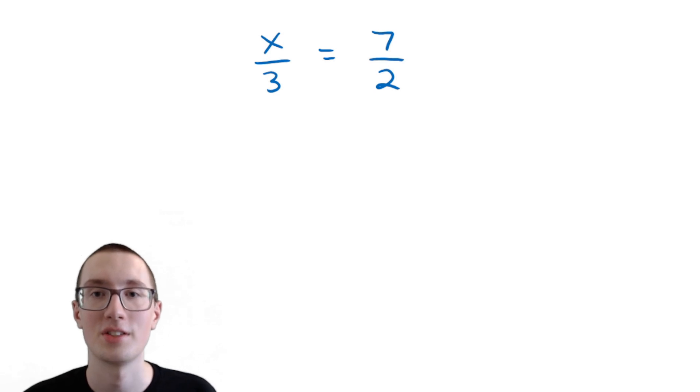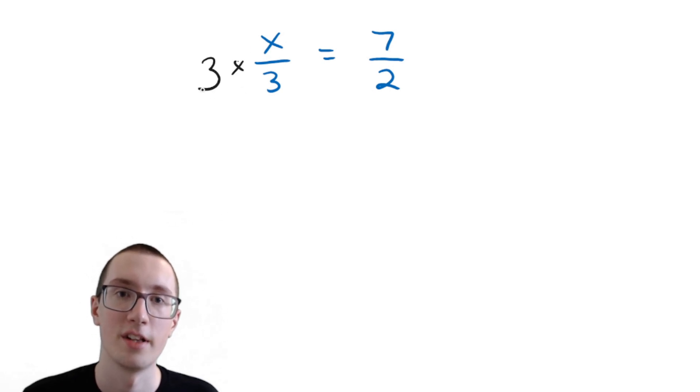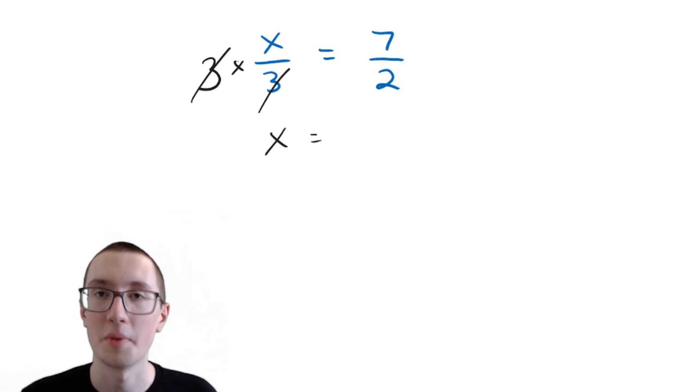Okay, so fractions can seem complicated, but remember, fractions are just division. They're the same thing. So x is being divided by 3 here, and we need to get x by itself. So what's the opposite of division? Multiplication. So we are going to multiply this by 3. These cancel out, and you're just left with x. But remember, you need to do the same thing on the other side. So we're going to multiply this by 3.